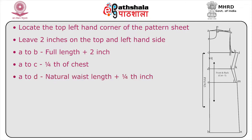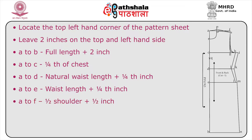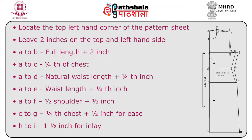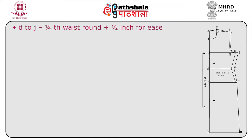A to D is the natural waist length plus one-fourth inch. A to E is waist length plus one-fourth inch. A to F is half shoulder plus half an inch. C to G is one-fourth chest plus half inch for ease.